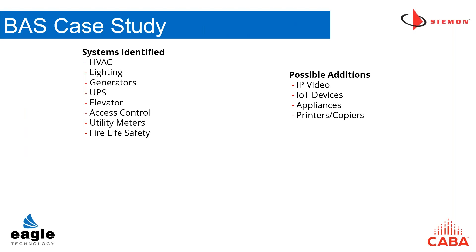I've been in building integration and systems optimization for quite a few years, and something that's changed dramatically is the economic model of an intelligent building. Three or four years ago, if you were building a new project and I said we should build an intelligent building, the conversation would sound like: we could do that, but it's going to cost X plus 10 percent. There was an ROI model where that 10 percent you'd make back over the next few years through energy reduction, more efficient processes, productivity, and so on.